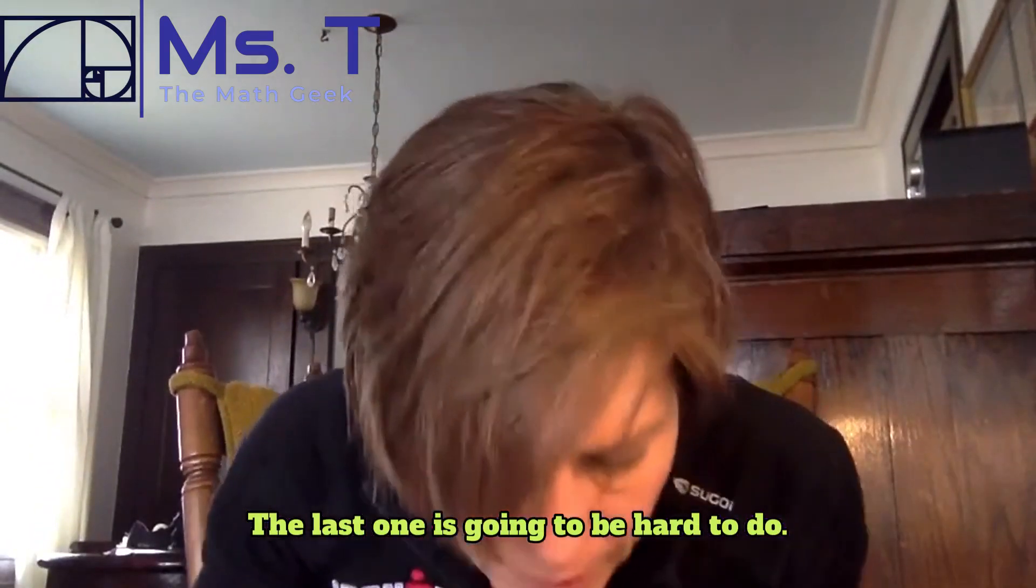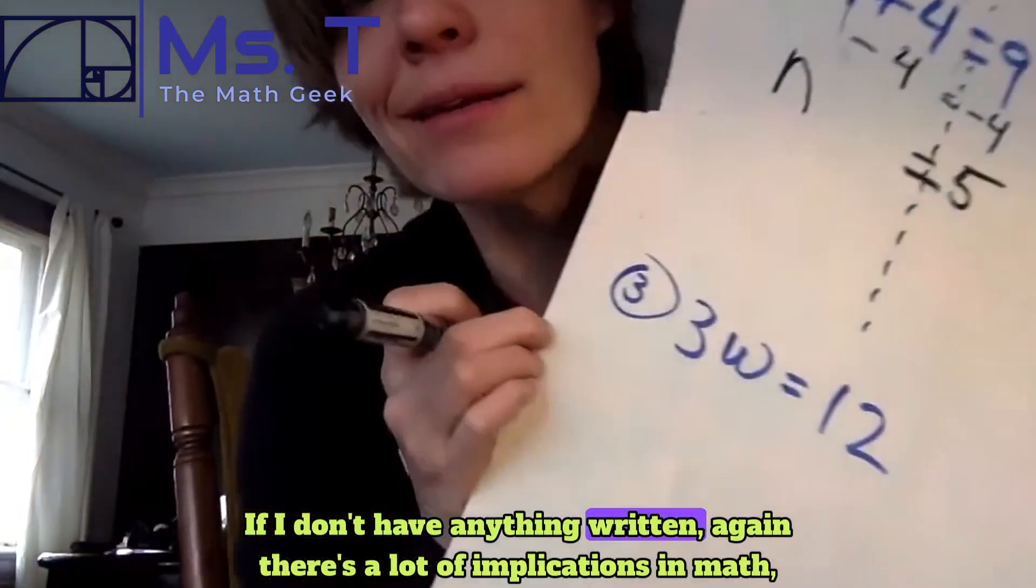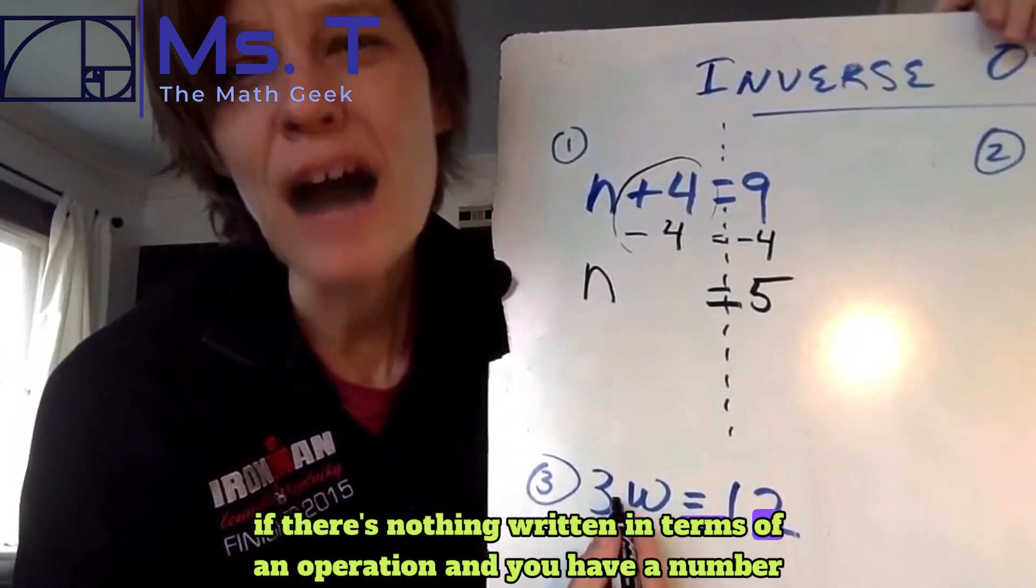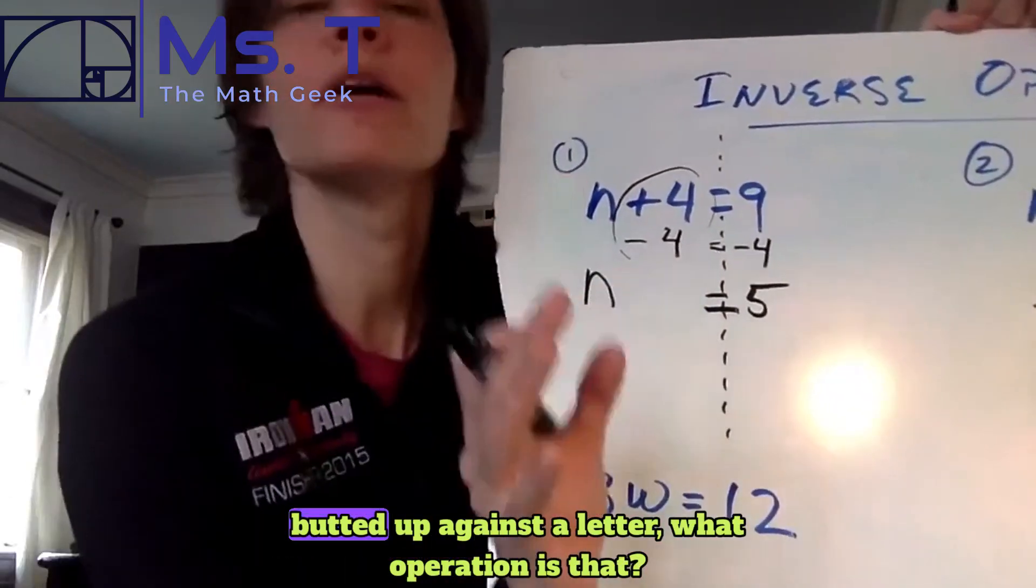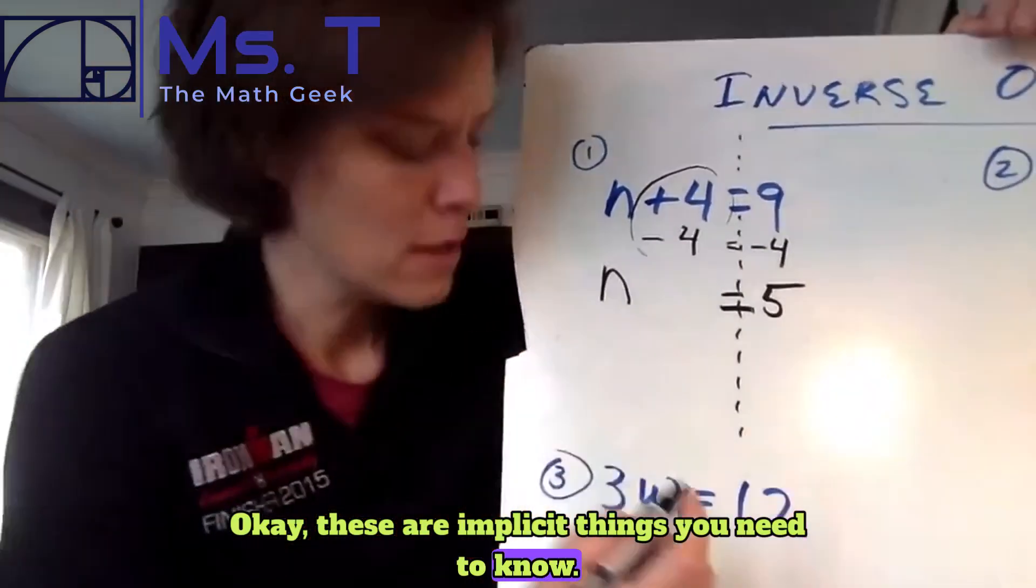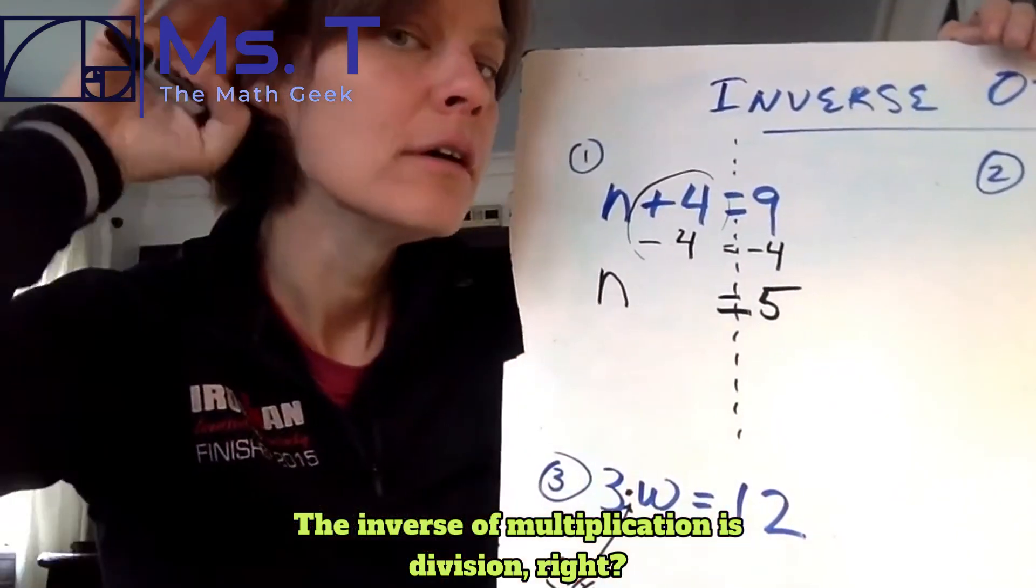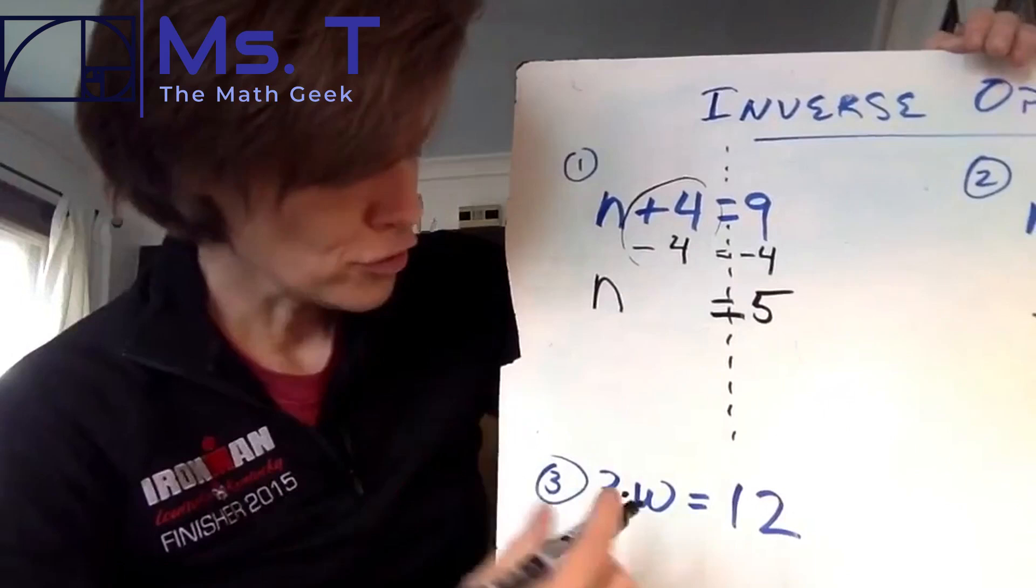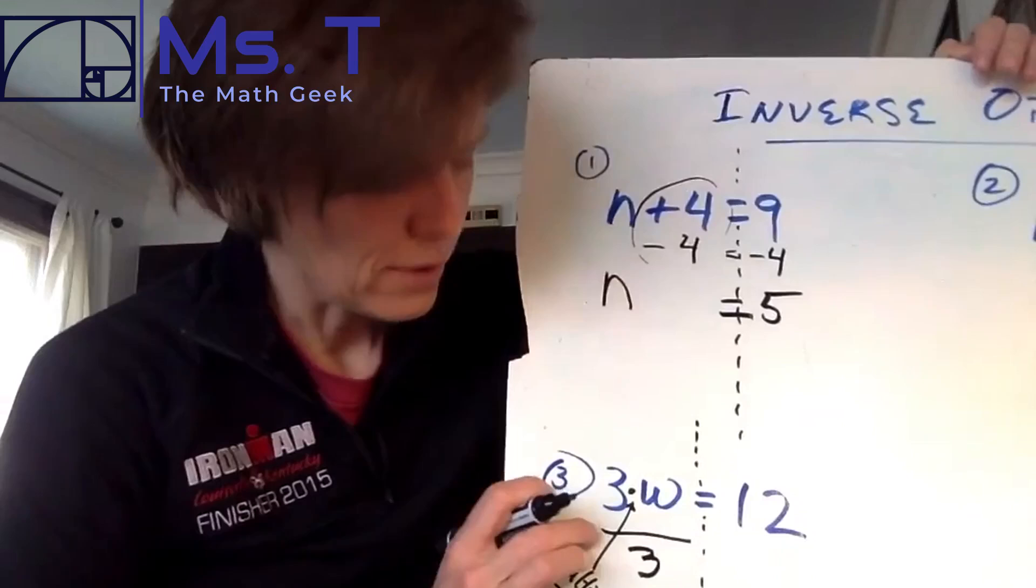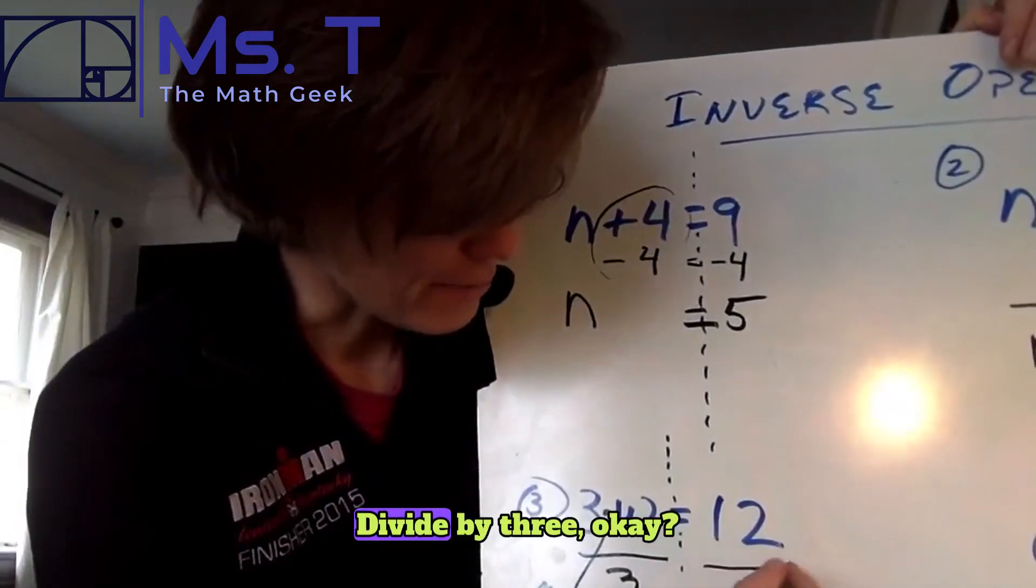The last one is going to be hard to do. Problem number four. Does that make sense? What is happening right there? If I don't have anything written, again, there's a lot of implications in math. If there's nothing written in terms of an operation and you have a number butted up against a letter, what operation is that? These are implicit things you need to know. This is multiplication. The inverse of multiplication is division, right? So we are going to, don't forget our balance line. Divide by three. Remember this is division. Fractions are implicit division. Divide by three.